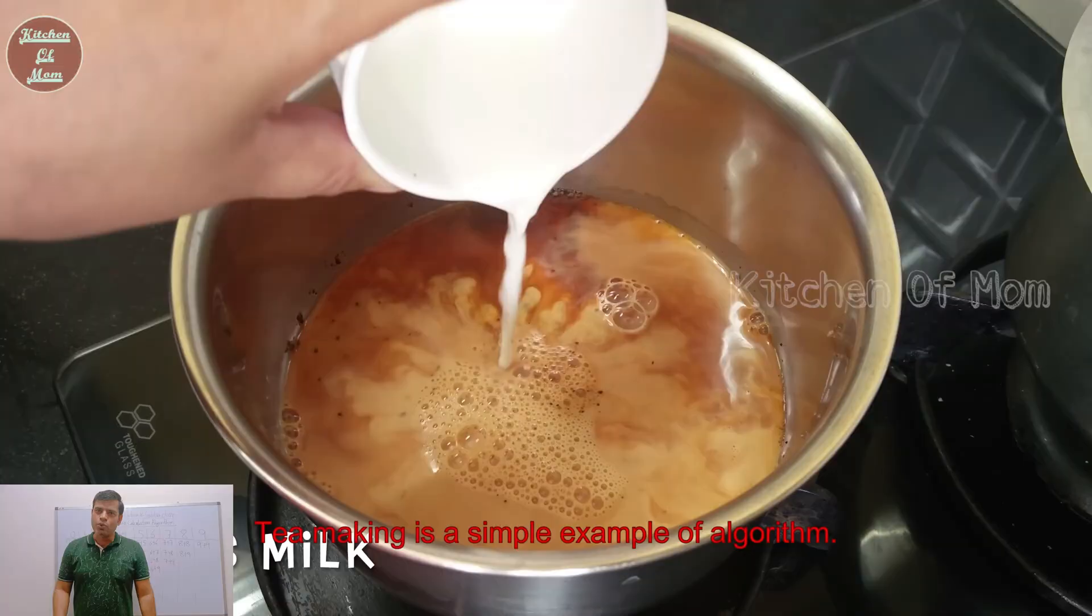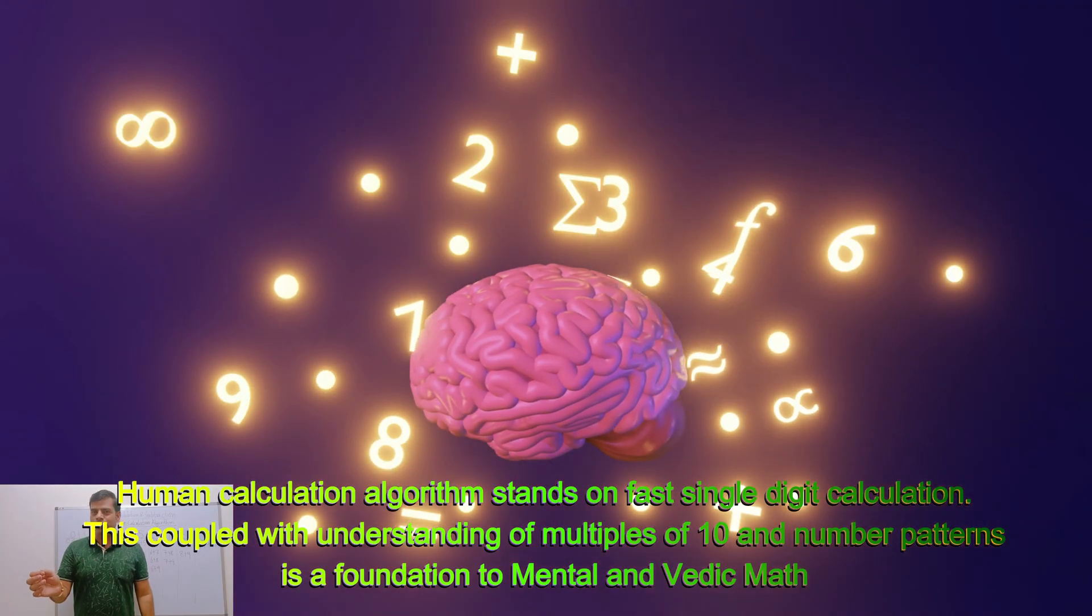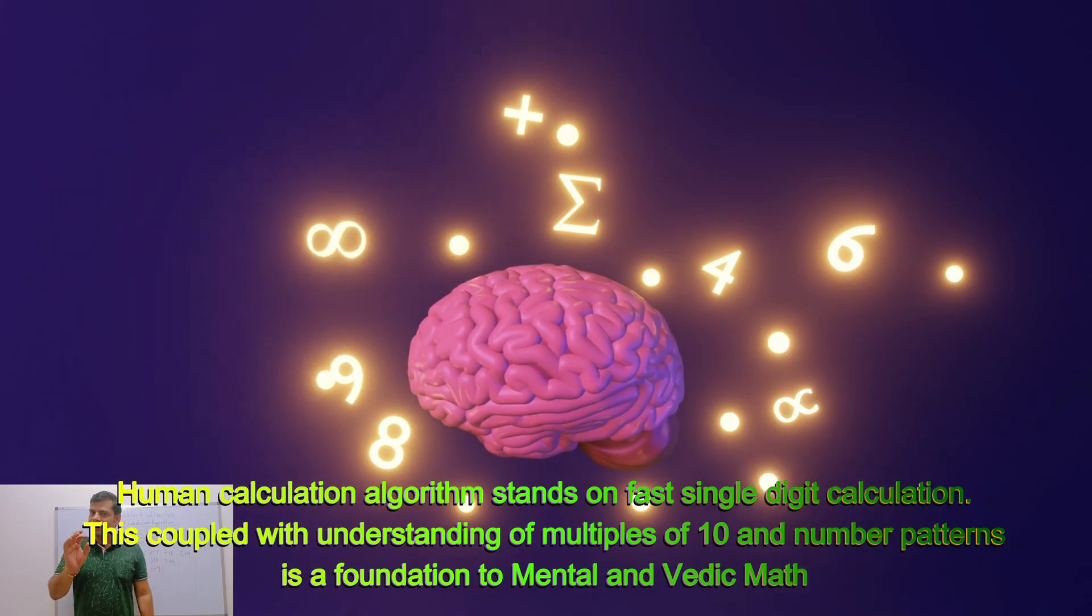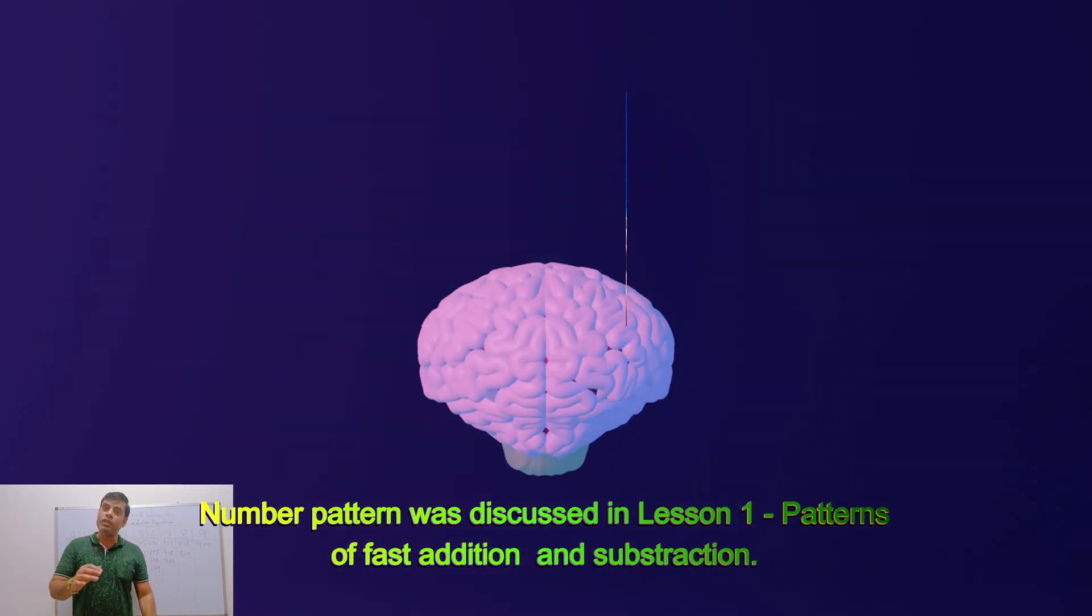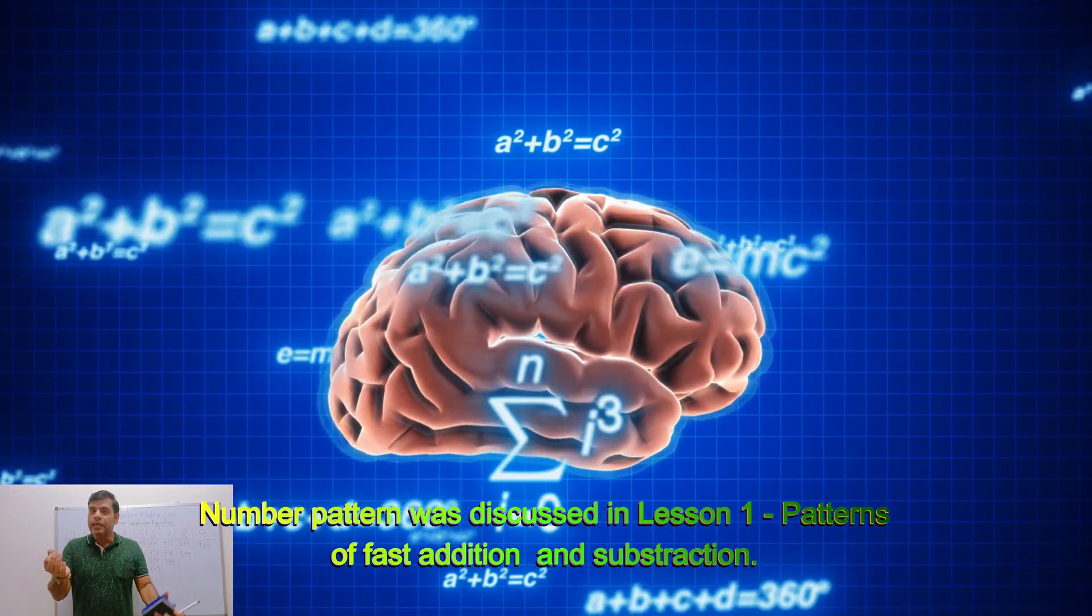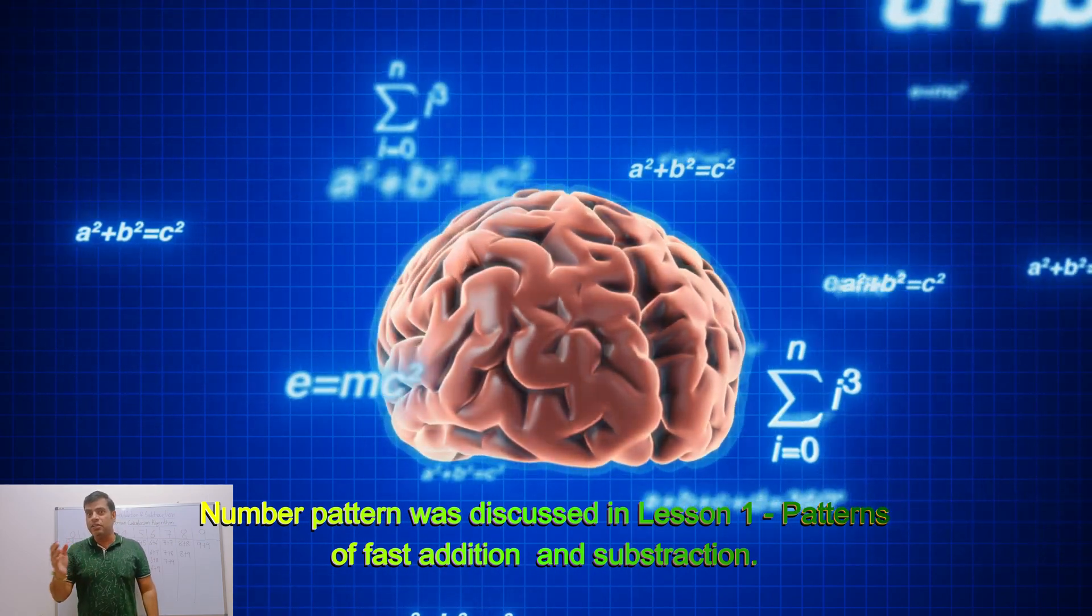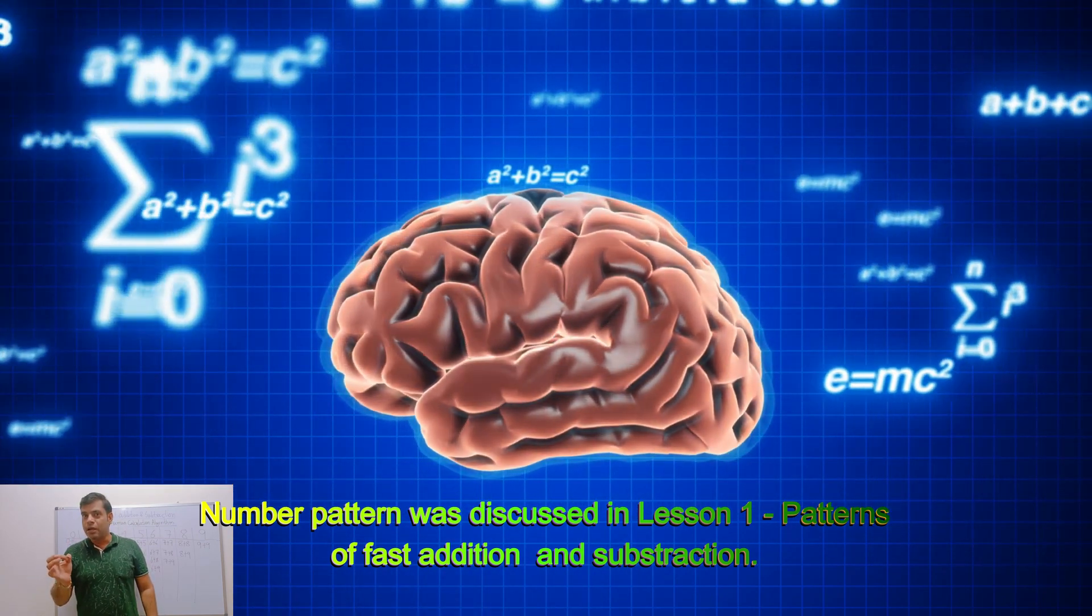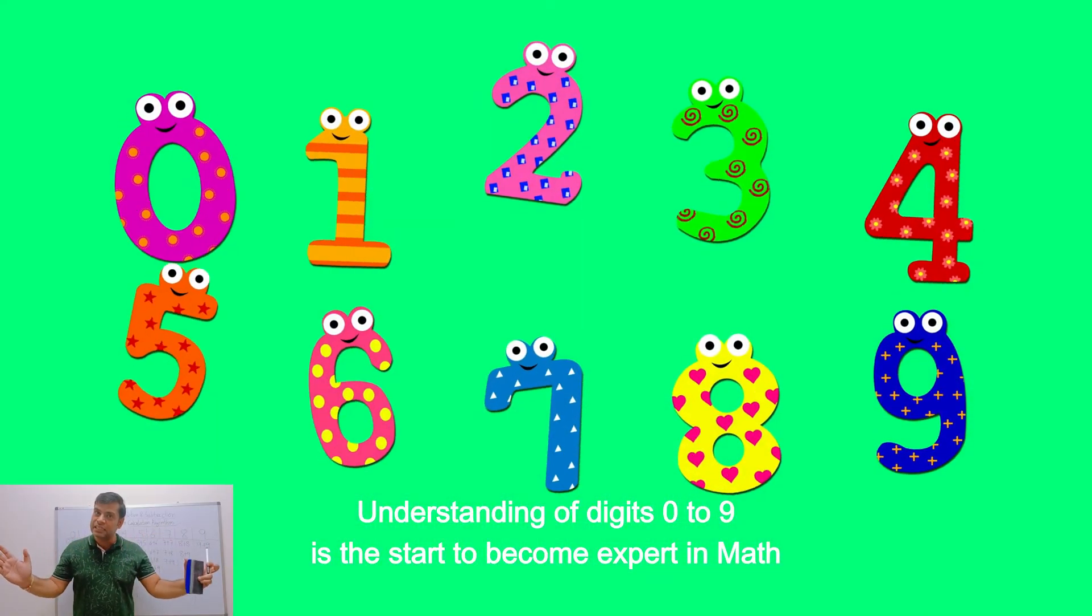So same way there is an algorithm to do fast addition and subtraction. Of course it starts with learning the pattern in the numbers, to learn how the numbers are built which we discussed in lesson one. How there are patterns in all the numbers, the numbers are built from 0 to 9 digits only, or you can say total 10 digits.